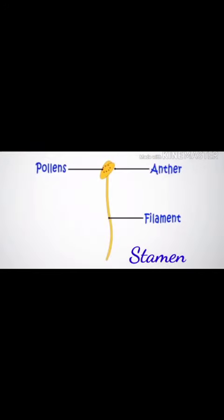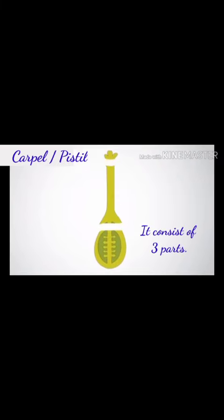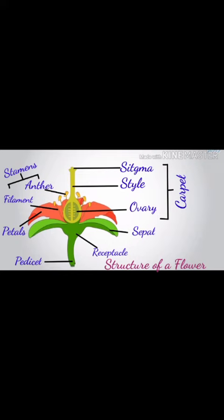A long stalk connected to the anther is called the filament. The fourth and last part of a flower consists of the female reproductive part called the carpel or pistil. Each carpel or pistil consists of three parts: the stigma, the style, and the ovary. This was all about the different parts of a flower — now read the chapter from the book thoroughly.